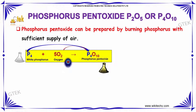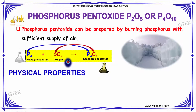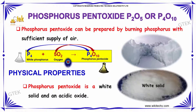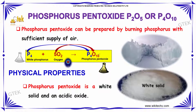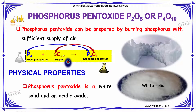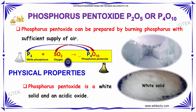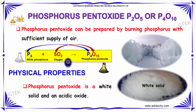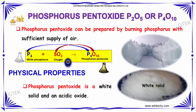Phosphorus pentoxide. Phosphorus pentoxide can be prepared by combining white Phosphorus with oxygen.